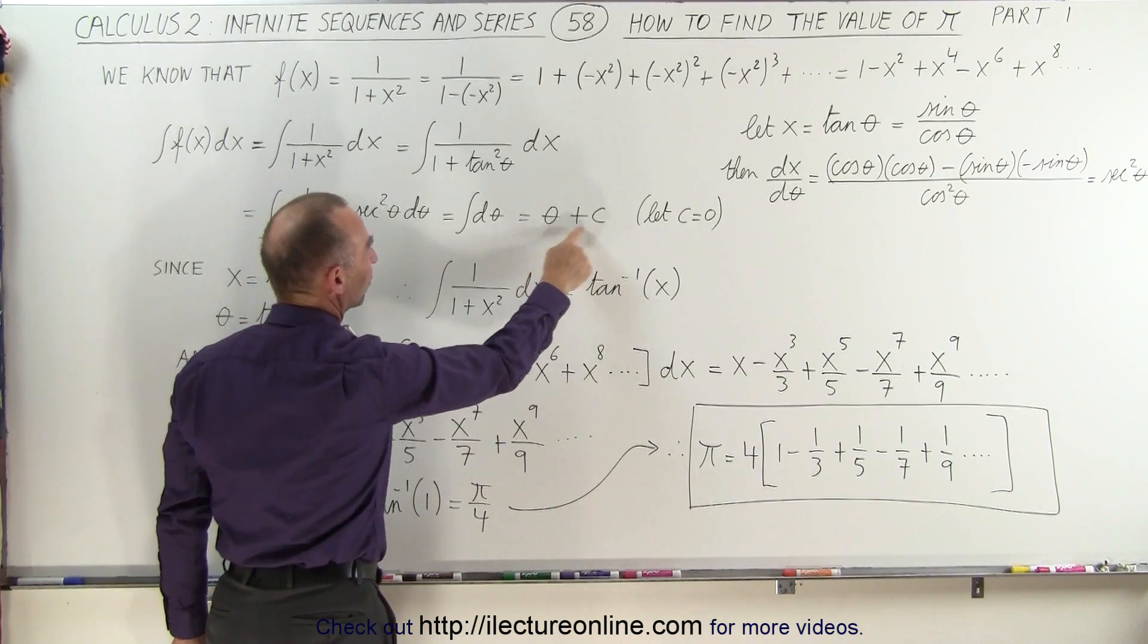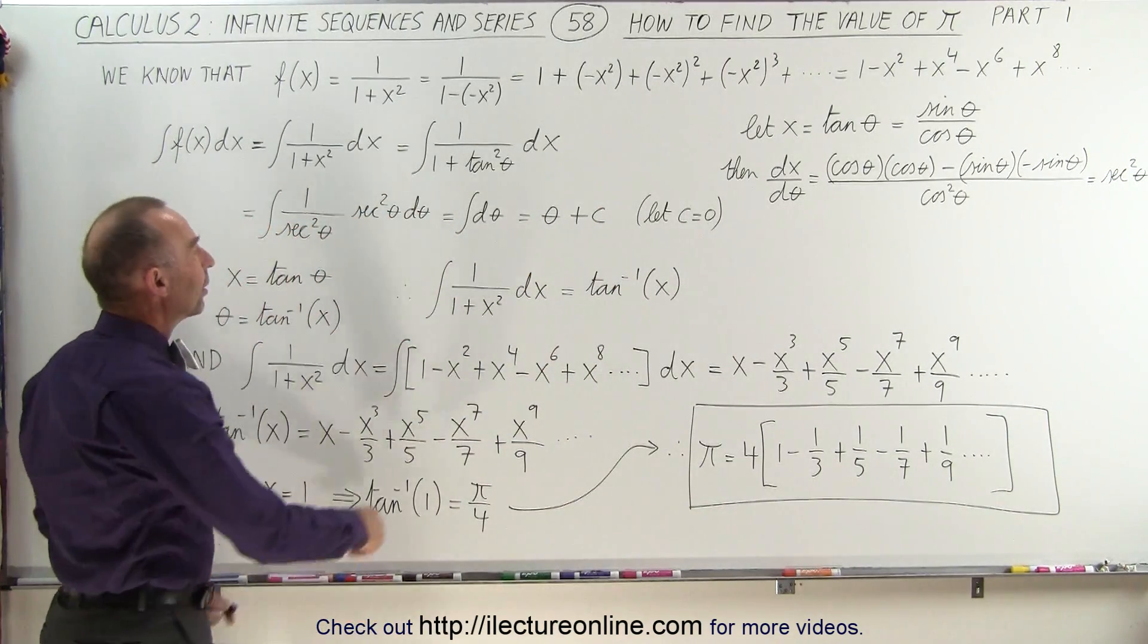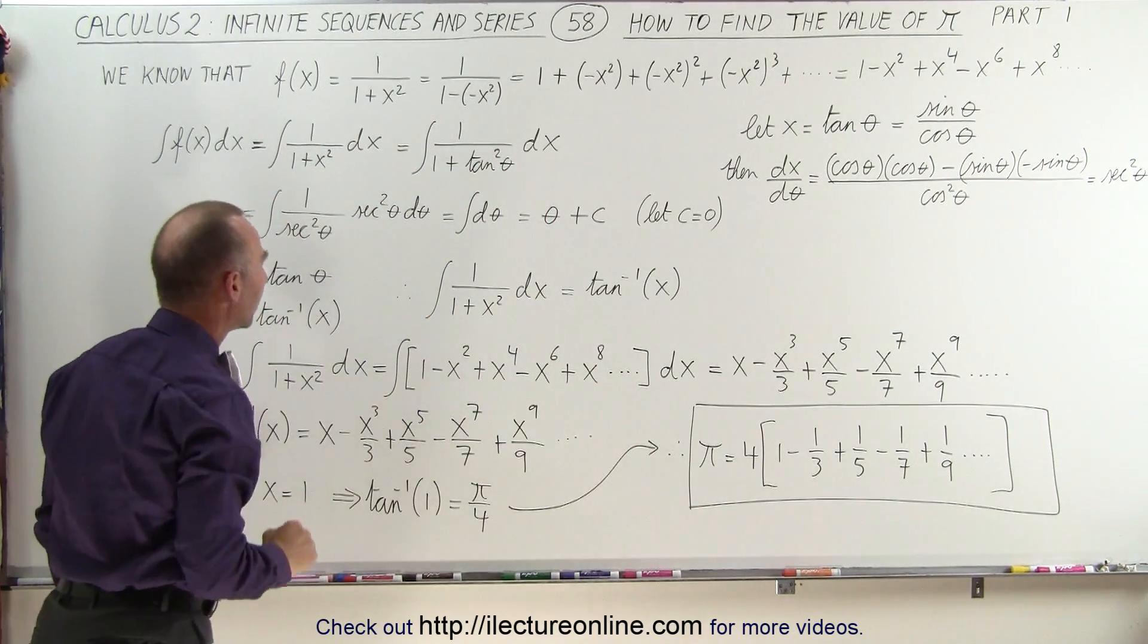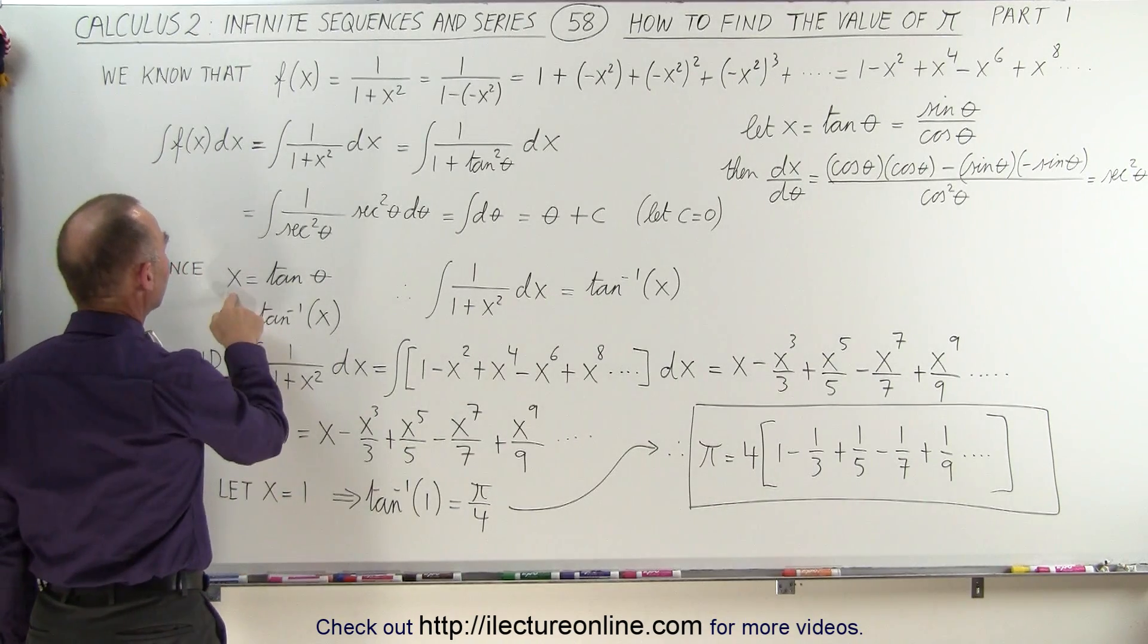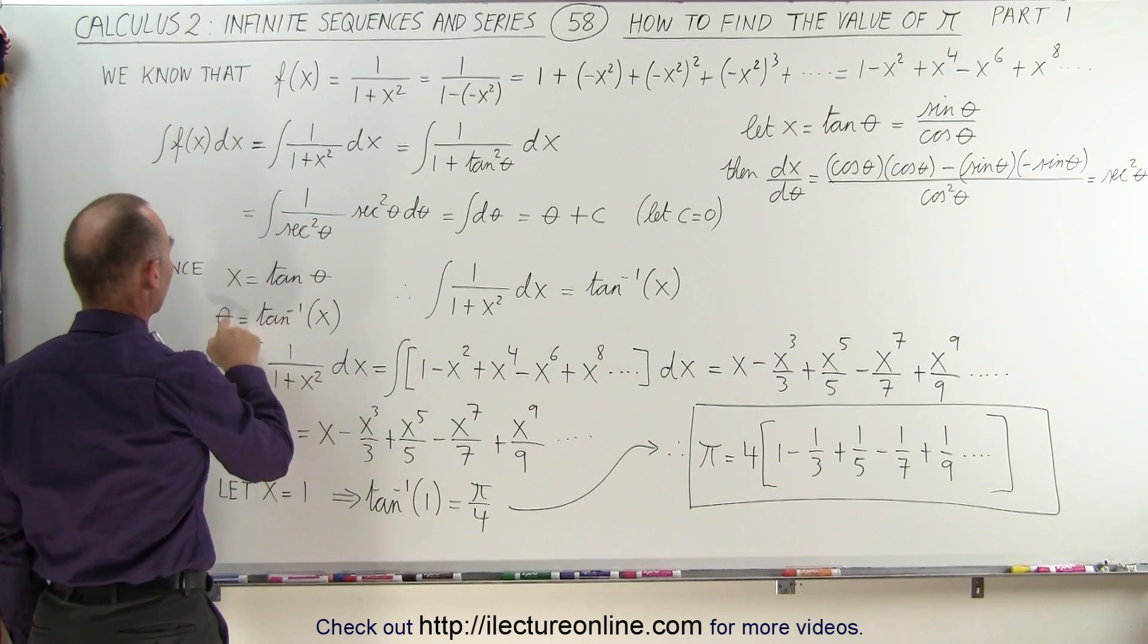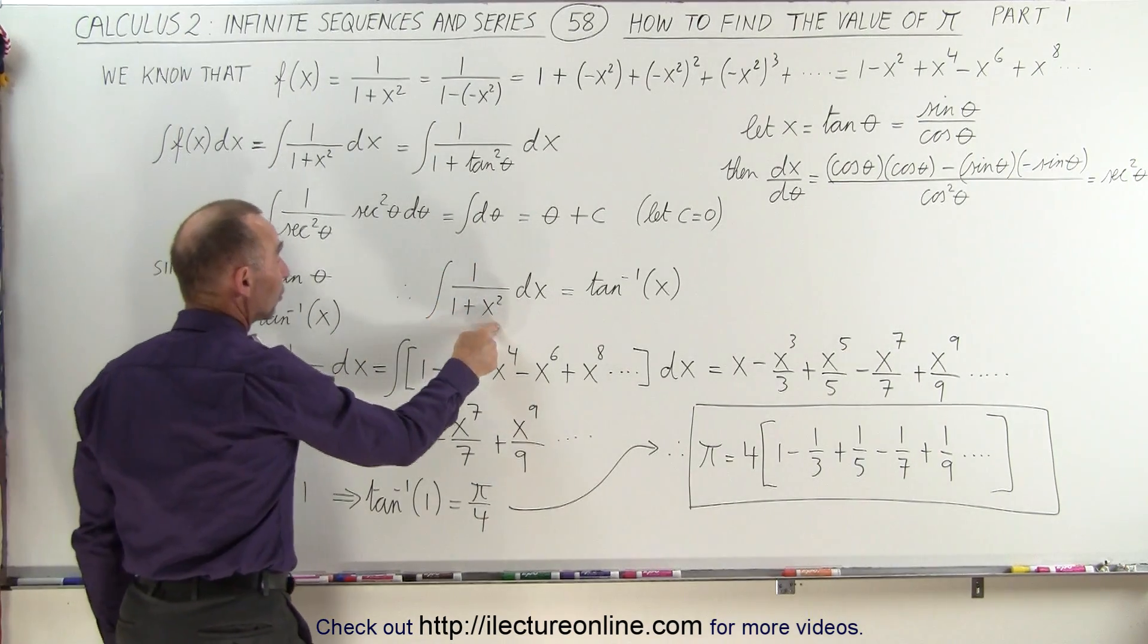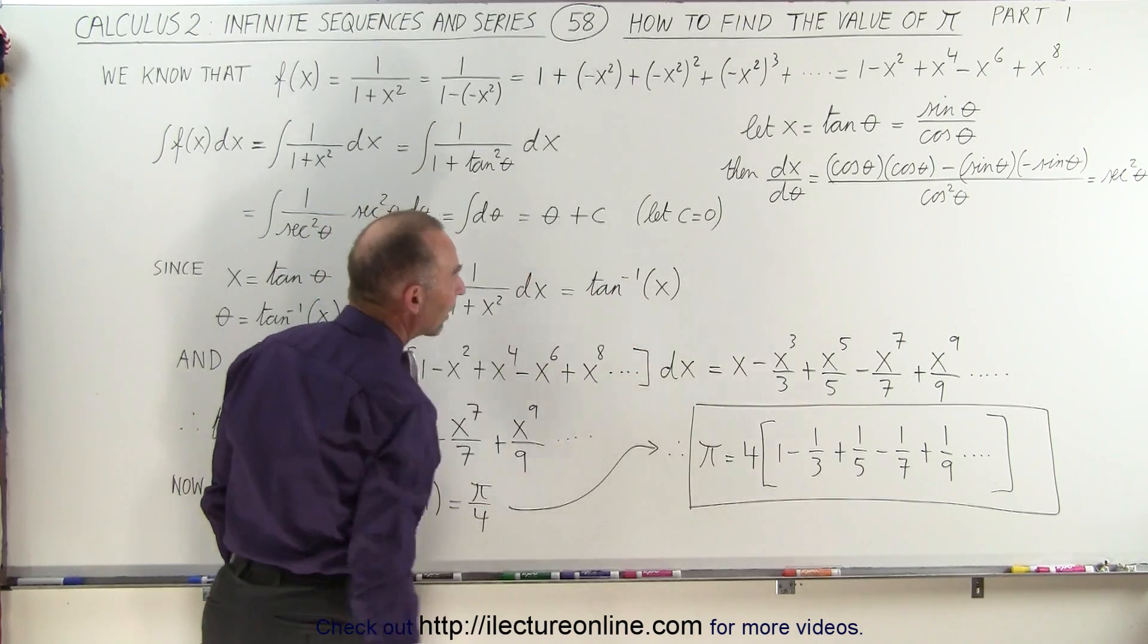The integral of that, of course, is theta plus a constant, and we're simply going to let the constant equal zero, so we end up with theta as the integral of this function. But then we have to substitute back. We know that x equals the tangent of theta, therefore theta equals the arctangent of x, which means the integral of this function can be written as the inverse tangent of x or the arctangent of x.